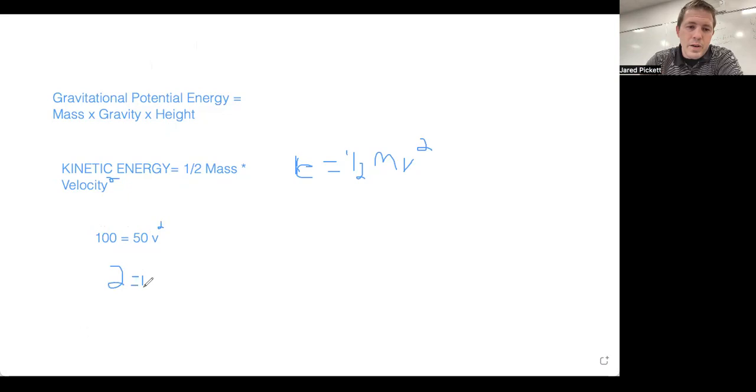So what do I do here, Mr. Pickett? How do I get rid of the V that's being squared? Well, you square root the value. So I would square root the V squared, and that's going to get rid of the square, and then I have to square root the other side. Now, I don't know what the square root of 2 is off the top of my head, but that's your answer. Your answer is going to be whatever the calculator tells you that the square root of 2 is.